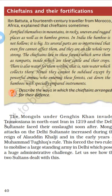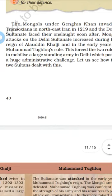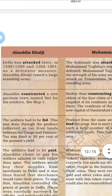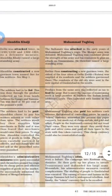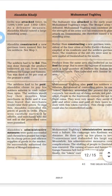Ibn Battuta described India in detail — how it was, what wealth they were having, what soldiers they were having, and what kind of cattle and crops they were growing. Both of these rulers, Allahuddin Khilji and Muhammad Tughlaq, will be discussed with reference to his explanations.